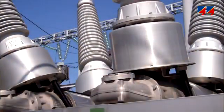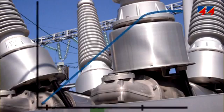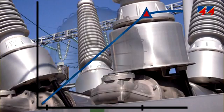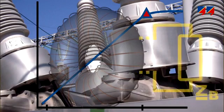Important parameters of a protection CT are its ratio, its excitation curve, the knee point, its winding resistance, and the burden.